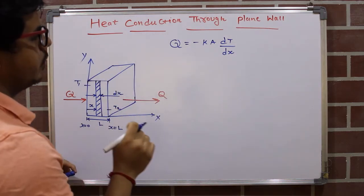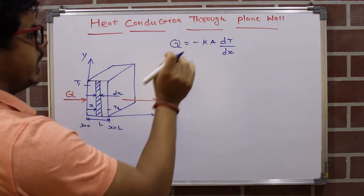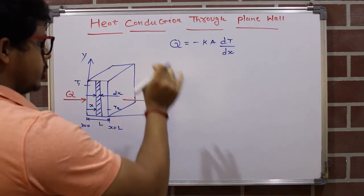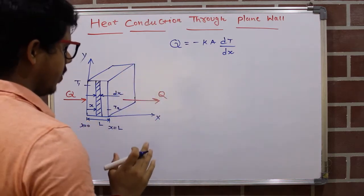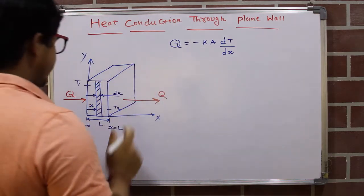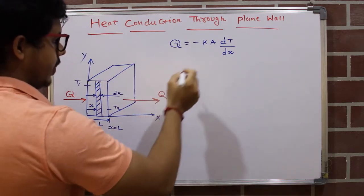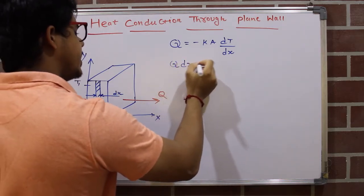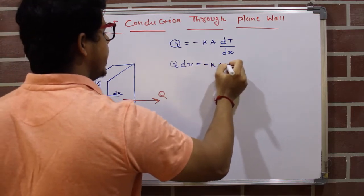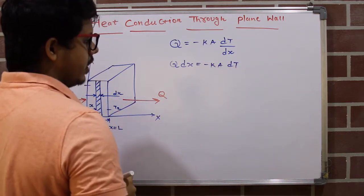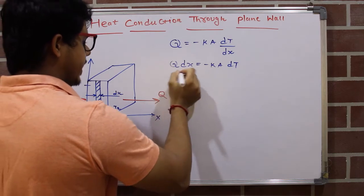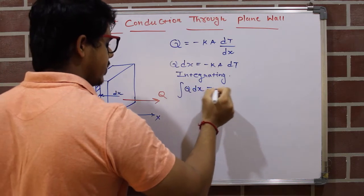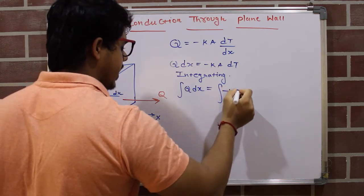The assumptions are the same as in the previous video where we derived heat conduction through a plane wall using the general heat conduction equation. Now, we multiply dx with Q: Q·dx = −kA·dT. Then we integrate both sides: the integral of Q·dx equals the integral of −kA·dT.